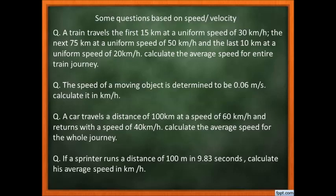The second question: the speed of a moving object is 0.06 m per second — convert it to km per hour. Third: a car travels 100 km at 60 km/h and returns at 40 km/h; calculate the average speed for the whole journey. Fourth: a sprinter runs 100 metres in 9.83 seconds — calculate average speed in km per hour.